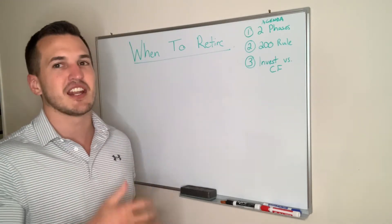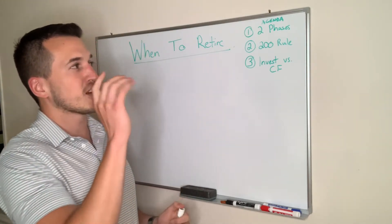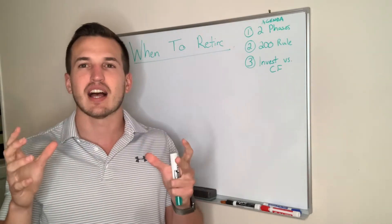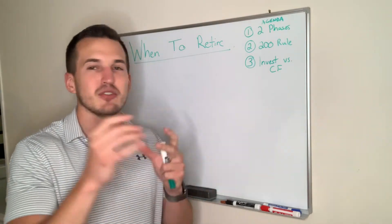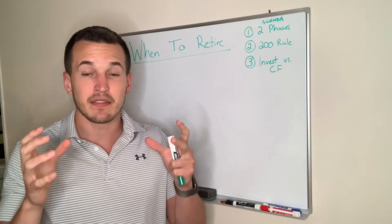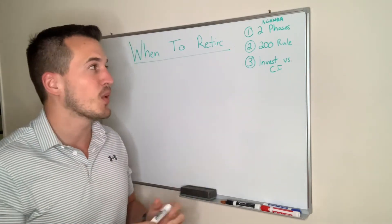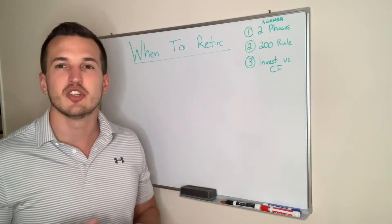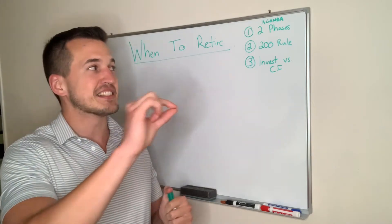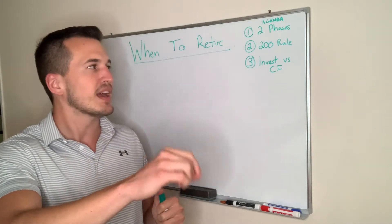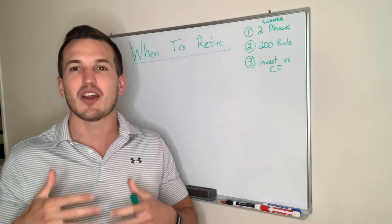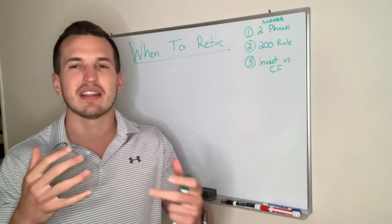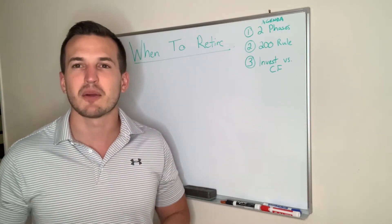On the agenda today, I'm going to go over the two phases of your life. This concept is going to help you tactically think about your life in a more strategic way. Then we're going to go over the 200 rule which is really going to set that target that you need to get to, and then we're going to talk about how do we actually get to that target. What options do we have?